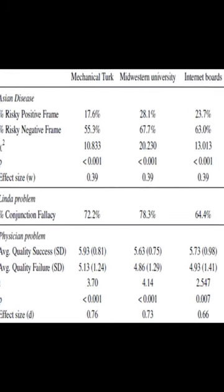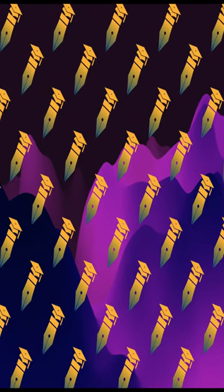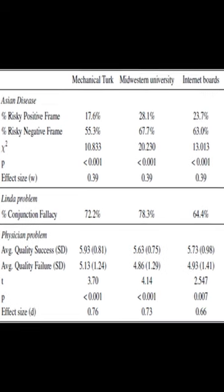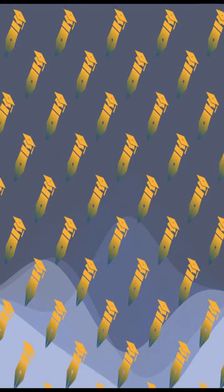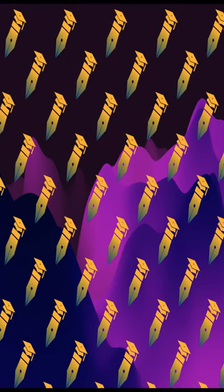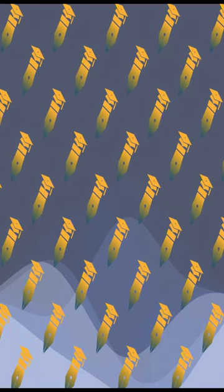Despite its popularity among social scientists for experimental data collection, concerns about the quality of data from Mechanical Turk subjects recruited from online labor markets may persist. To address these issues, new demographic data is presented, the strengths of Mechanical Turk are reviewed in comparison to other recruitment methods, and the magnitude of effects obtained using Mechanical Turk and traditional subject pools are compared.